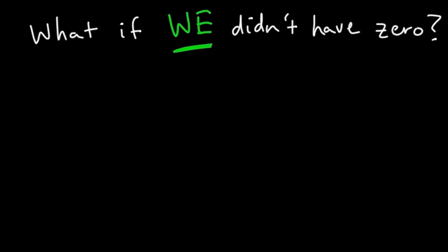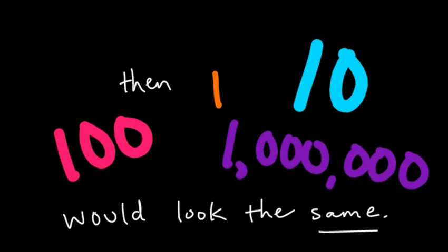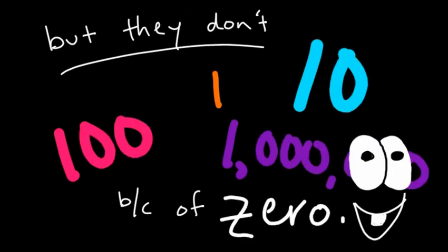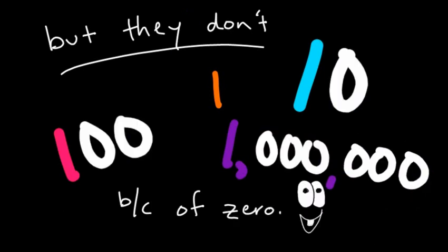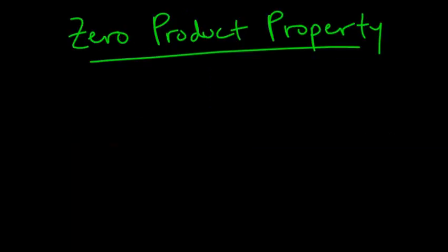So, what if we didn't have zero? Then 1 and 10 and 100 and a million, they would all look the same. Fortunately, they don't. Why is that? That's because of zero. You can see it blinking. That guy's really happy about it.